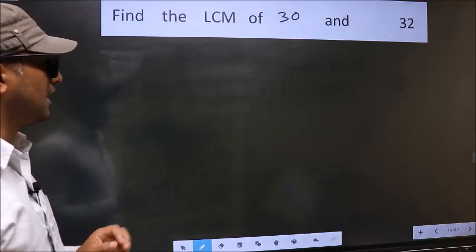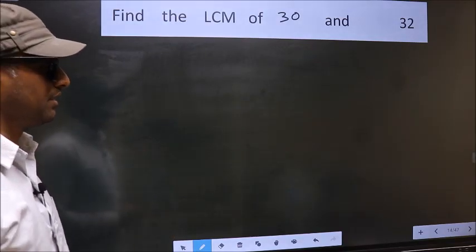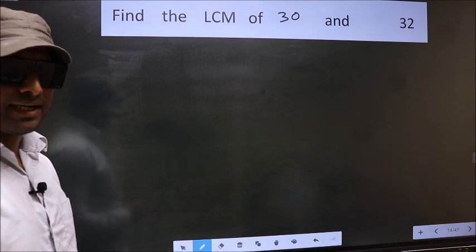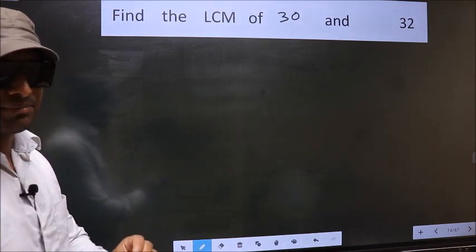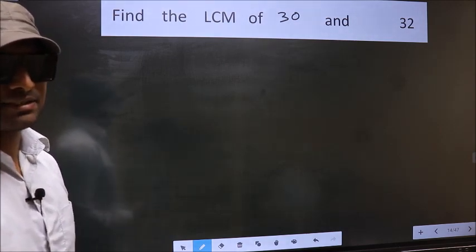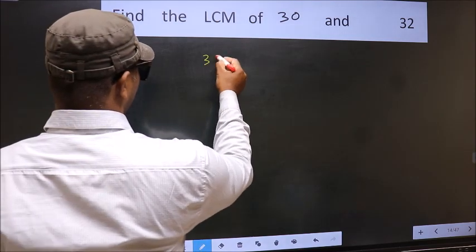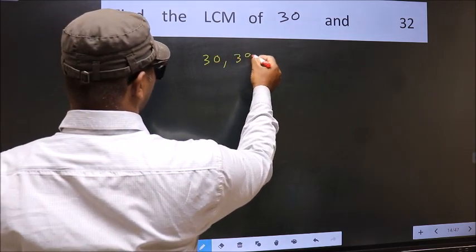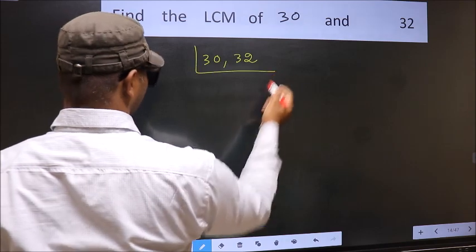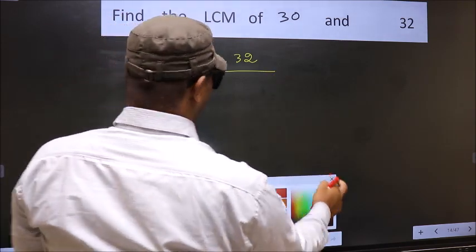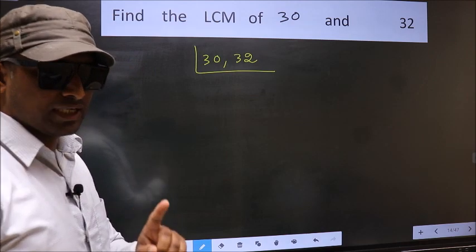Find the LCM of 30 and 32. To find the LCM, first we should frame it in this way: 30 and 32. This is step 1.